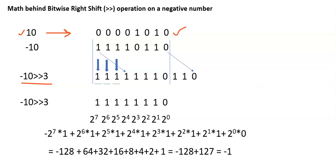Then we need to find out minus 10. How do we find out minus 10? As discussed in the previous videos, negative numbers in the computer system are stored in 2's complement form. So for positive 10, we need to find out the 2's complement value, which will become minus 10.